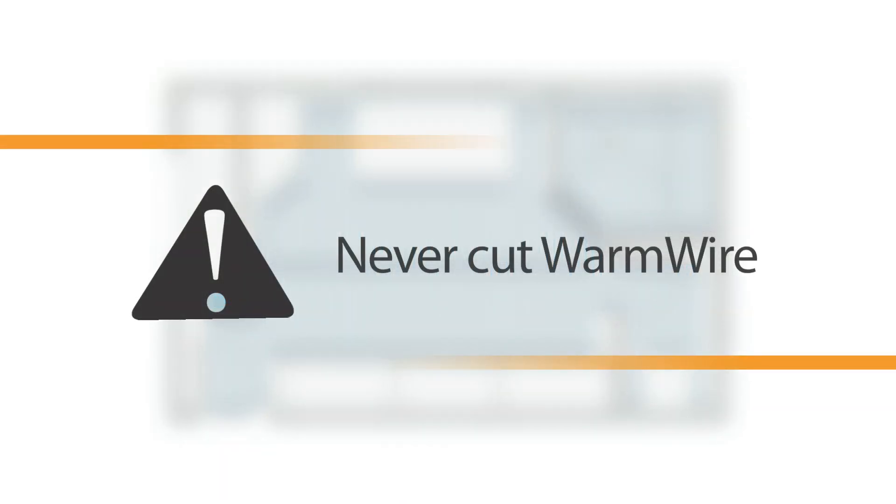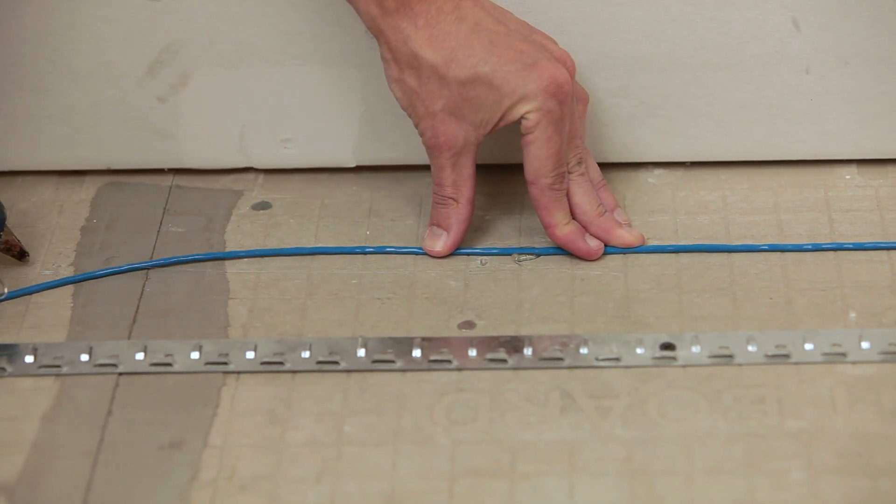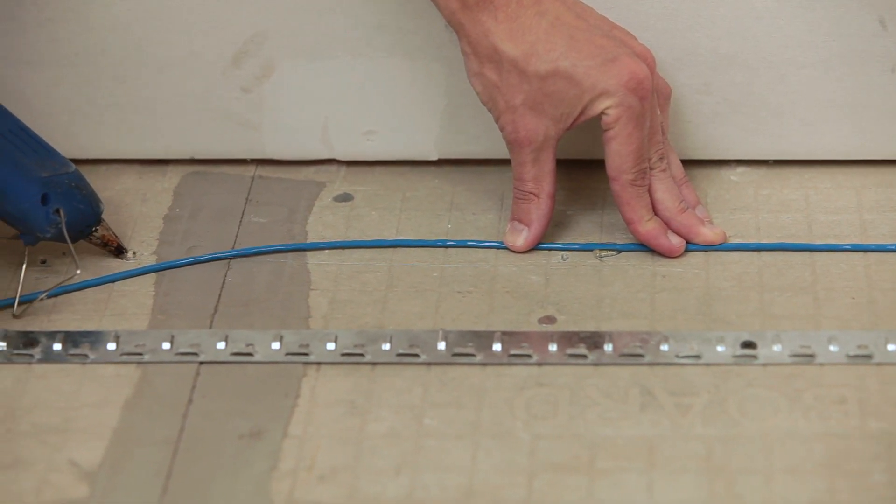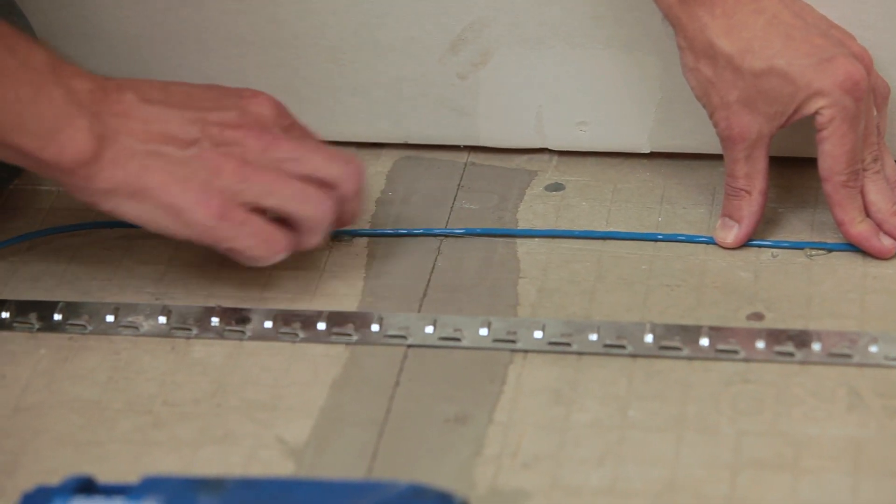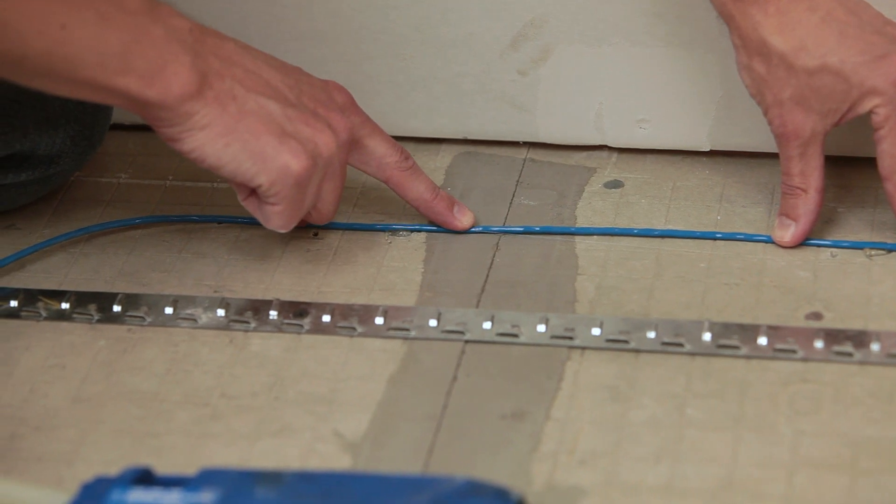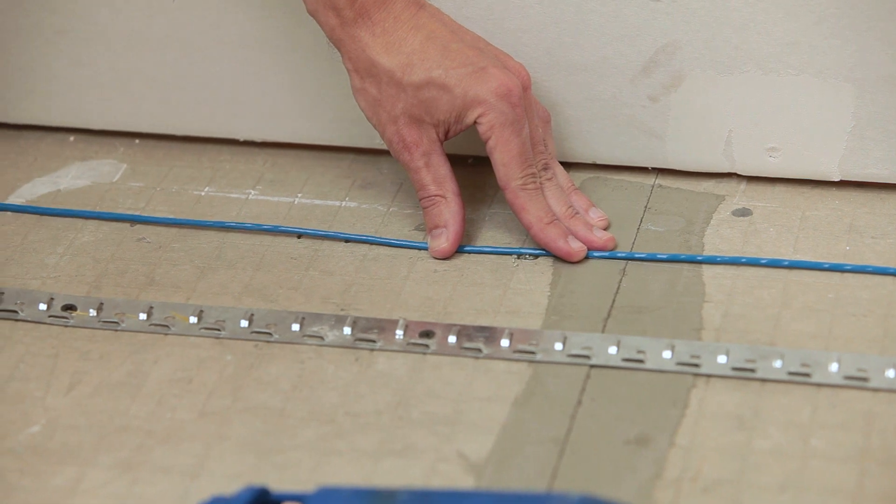This can cause dangerous overheating and will void the warranty. You may also consider using the additional wire along a perimeter or an area where heat isn't needed but will do no harm. Do not extend the wires into areas that will not have the same mortar and floor treatment and do not place the wire where it will be covered later by trim work or built-ins.